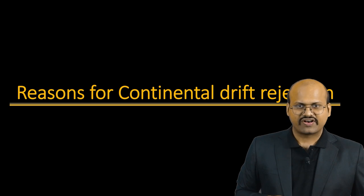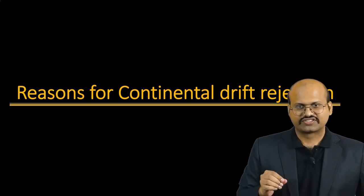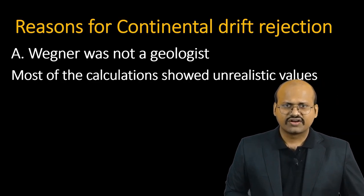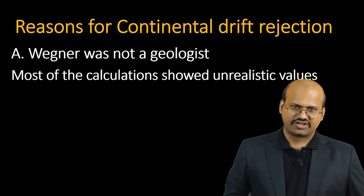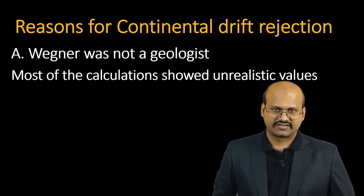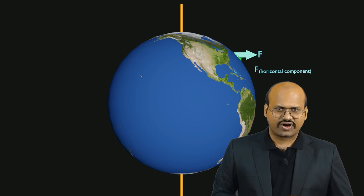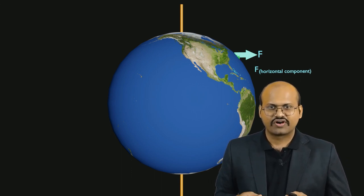Even though Wegener gave a number of evidences to support his theory, the Continental Drift Theory was rejected due to flaws in his calculations. Wegener was a climatologist and not a geologist, due to which he lacked accuracy in calculation and his calculated values were unrealistic. The horizontal component of centrifugal force, when calculated by other geologists, was found to be too small to cause movements of continents. Moreover, the tidal forces were also found too weak to cause any continental movement. In fact, if the force calculated by Wegener were true, it would cause the rotation of the earth to stop.